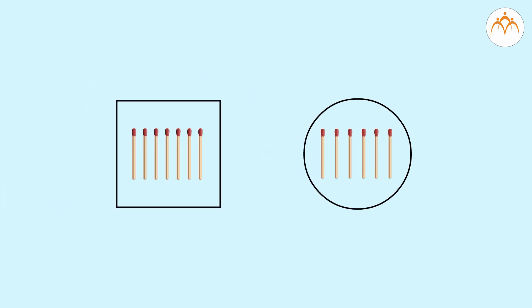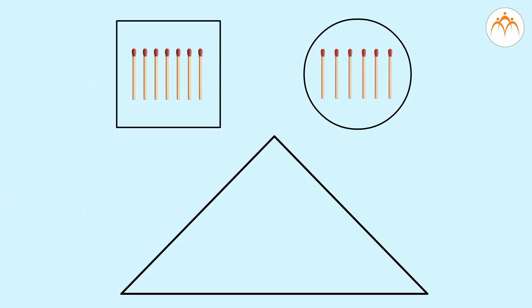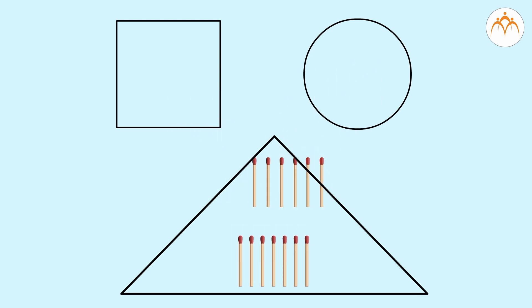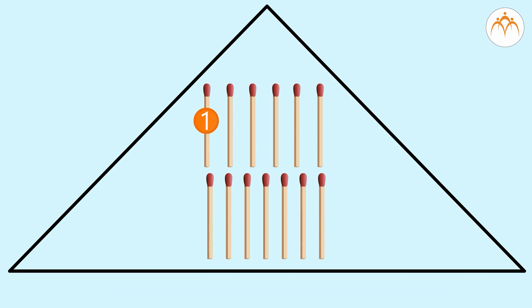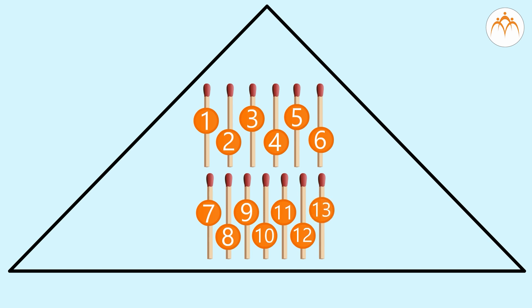Now, we shall put all the sticks in the triangle. Now we shall count all the sticks in the triangle. 1, 2, 3, 4, 5, 6, 7, 8, 9, 10, 11, 12, 13. Right. There are 13 sticks in the triangle.